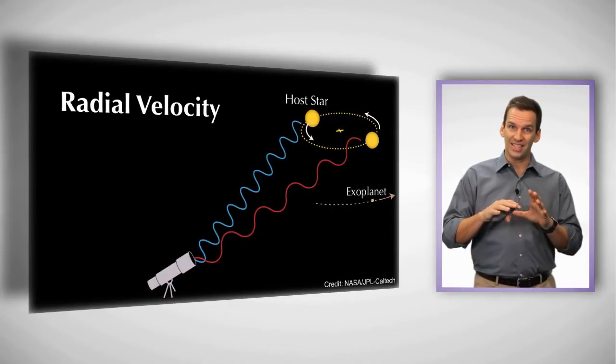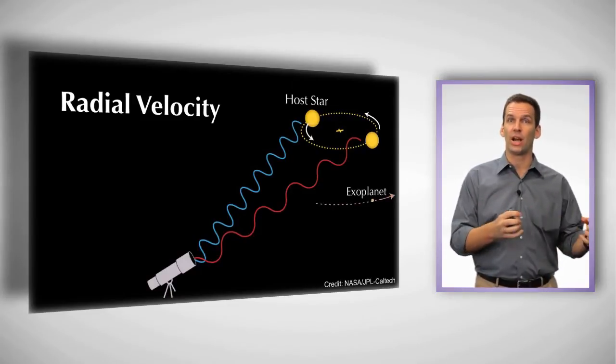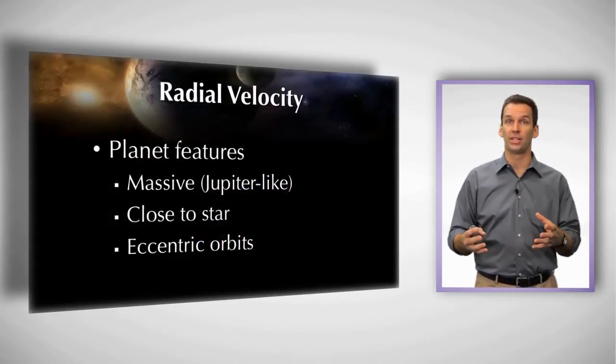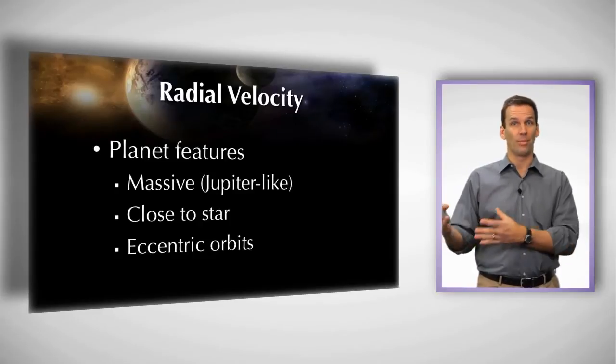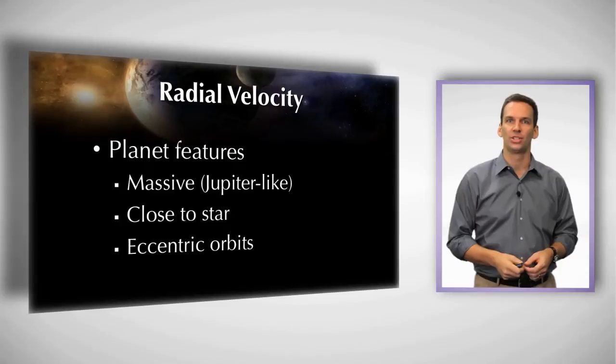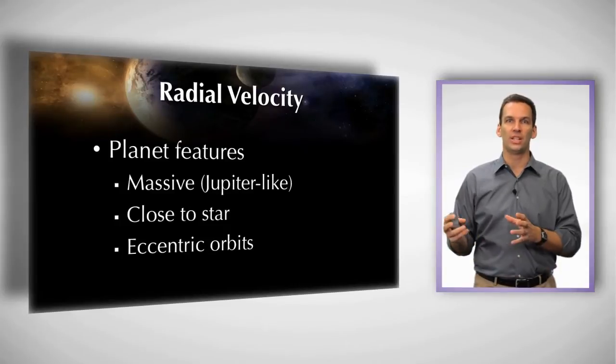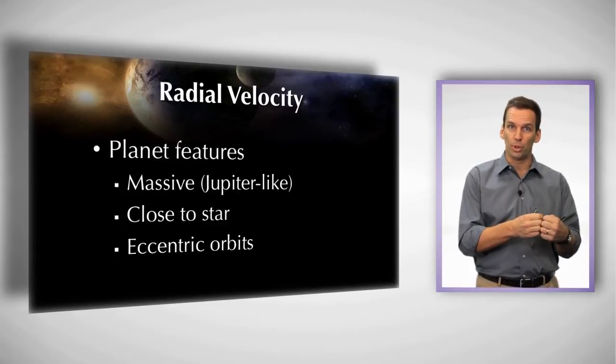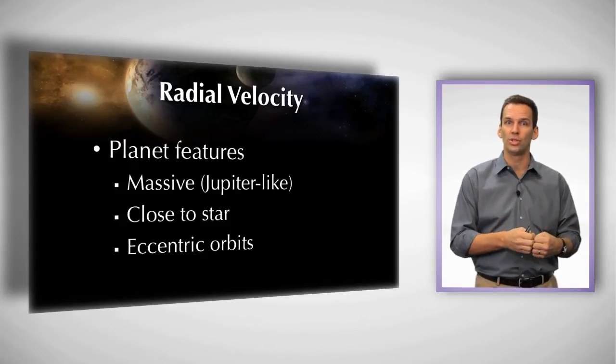Now this technique, because it relies on the gravitational attraction of the planet to the star, obviously is going to be sensitive to planets that are more massive. Because the more massive a planet is, the more gravitational tug it exerts on a star. It's going to be sensitive to planets that are closer into the star, because the gravitational pull between two objects is greater the closer they are.